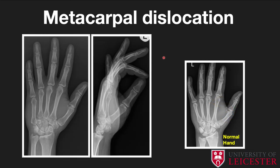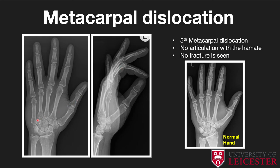Moving to the hand, an important dislocation not to miss is a fifth metacarpal dislocation. On AP and lateral projections there is significant malalignment of the fifth metacarpal. On a normal radiograph it articulates nicely with the hook of the hamate, but here it's dislocated — the fifth metacarpal has jumped forward. Interrogate both AP and lateral radiographs carefully for any incongruity. In this case there is no fracture, only a dislocation.